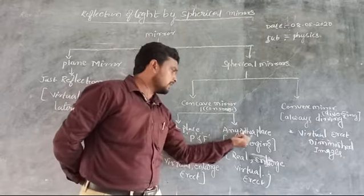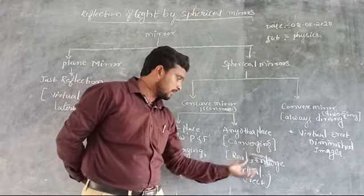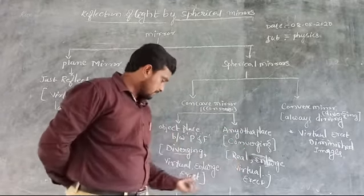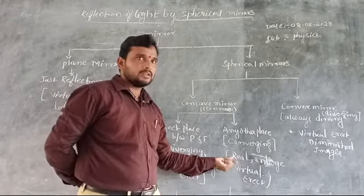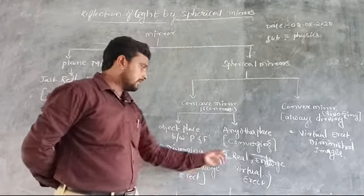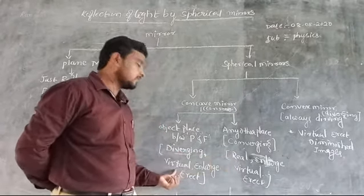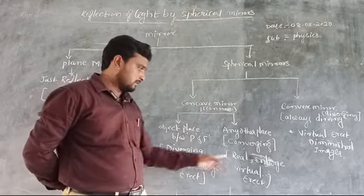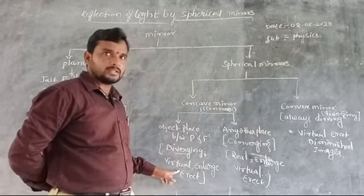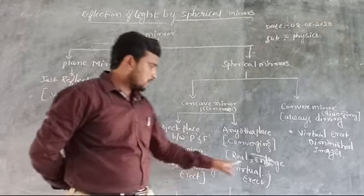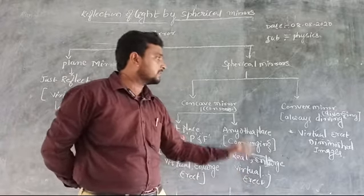For any other object position in a concave mirror, it acts as a converging point and forms a real image. A virtual image cannot be held on a screen, while a real image can be held — that is the difference between real and virtual images. So the concave mirror forms a virtual and enlarged image when the object is between pole and focus.